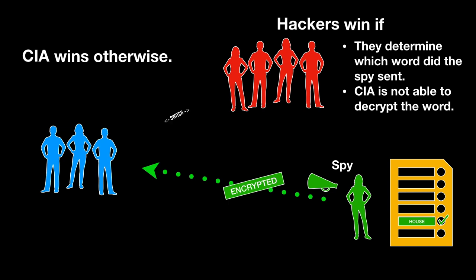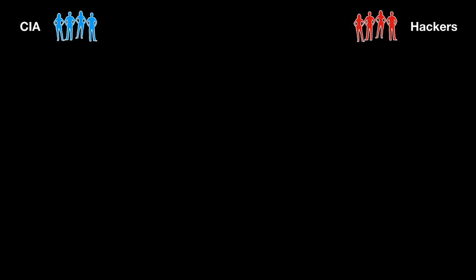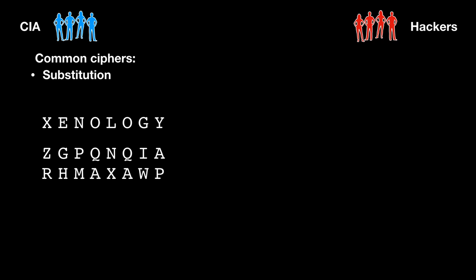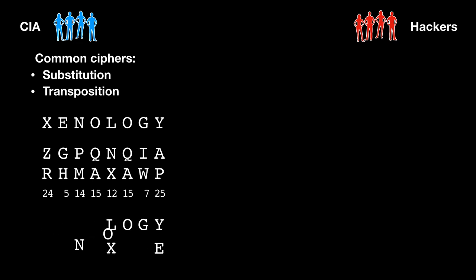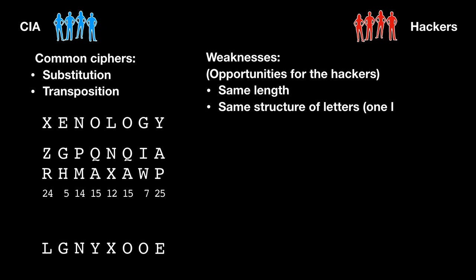After the first try the teams should switch, because then students usually start to discover key features of a good cipher. Let's see a typical process of thought. First, CIA usually comes up with a simple substitution cipher that simply replaces each letter with another one or a number. Sometimes a transposition is used. Both of these approaches open opportunities for hackers because they preserve the length of the word and the letter structure.